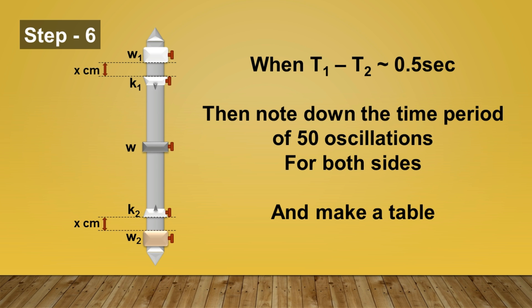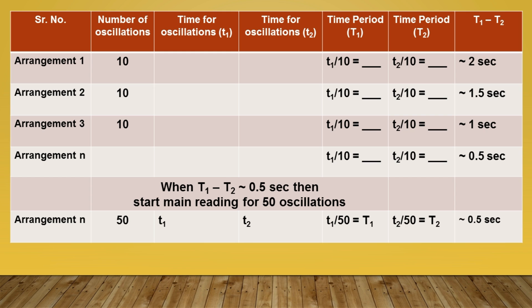Now you can note down the time for 50 oscillations for both sides and then make a table. Now you can write all these values in this table.